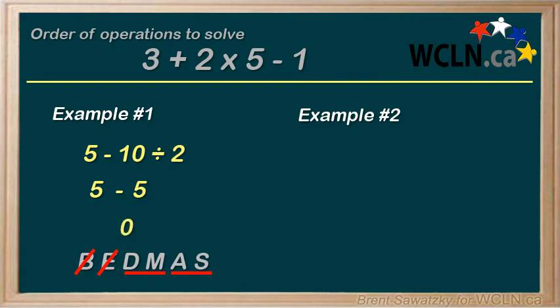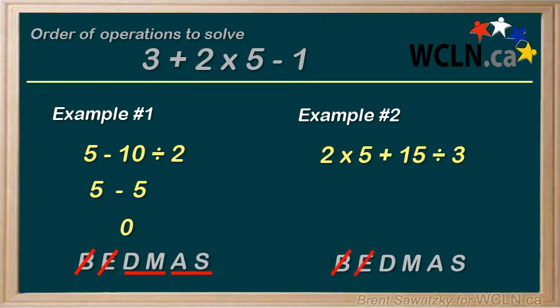Let's try a slightly more complicated one. How about 2 times 5 plus 15 divided by 3? Well, we think BEDMAS. There's no brackets. There's no exponents. Division and multiplication. Well, we have a multiplication at the beginning. 2 times 5 is 10. And we have a division at the end. 15 divided by 3 is 5. And so we have 10 plus 5. And we're at the addition and subtraction, so we can bring those together for a total answer of 15.